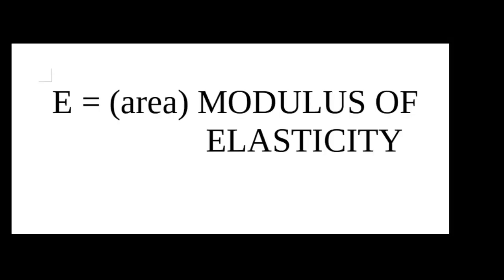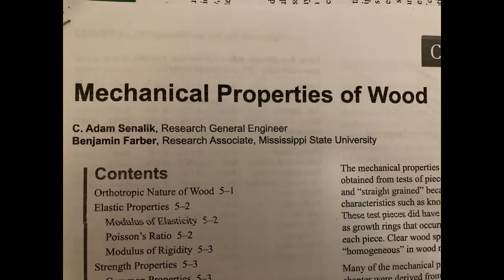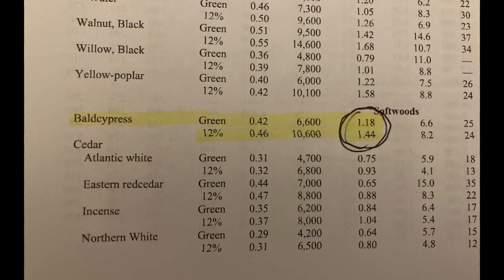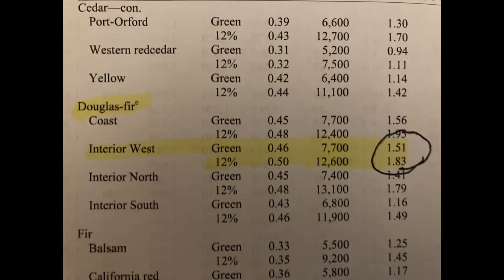E stands for the modulus of elasticity of the wood being used to build the mast. This is a number determined by measurement in a lab and can be found in tables available on many internet sites. For example, our plan specifies cypress, which from the table is 1.44 times 10 to the 6. We have the option of using other woods than specified in the plans and can therefore increase or decrease the mast strength and stiffness depending on the wood we choose. For example, I will be using Douglas fir with a modulus of 1.83, which is about 25% stiffer and stronger. But remember, these values should be taken with a grain of salt, since wood properties are highly variable.